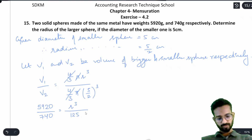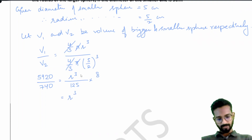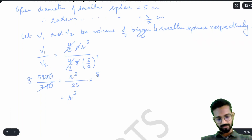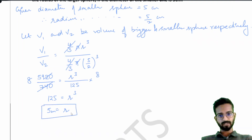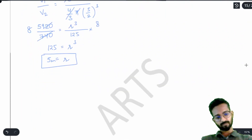Solving: r³ = (5920/740) × 125/8 = 125, so r = 5 cm. Remember, this small 'r' here represents the bigger sphere's radius. This is what we were supposed to find in question number 15.